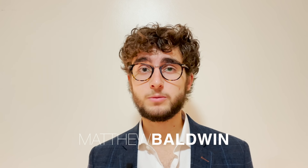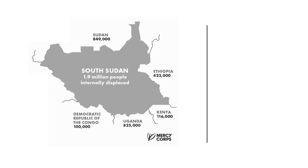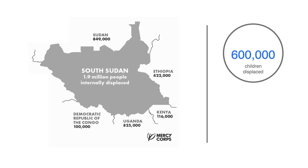Have you ever tried to imagine 600,000 people? That's more than the population of Miami. The civil unrest in South Sudan has displaced 600,000 children into Uganda alone. 600,000 children — refugees who have fled to Uganda.